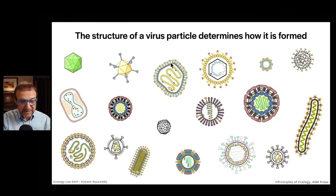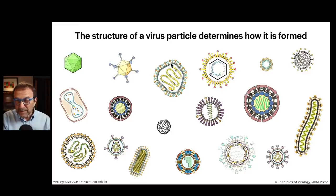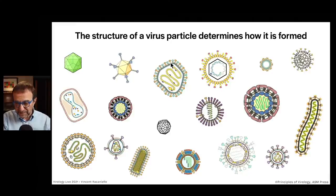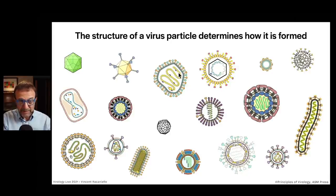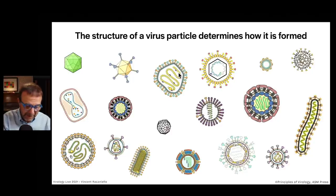That's the good thing about virology in the sense that the way we're teaching it — I tell you there are seven genome types, there are three structural types, and now you can look at the Baltimore scheme and know how a genome gets to mRNA. And today you're going to know, looking at a virus particle, how it assembles.